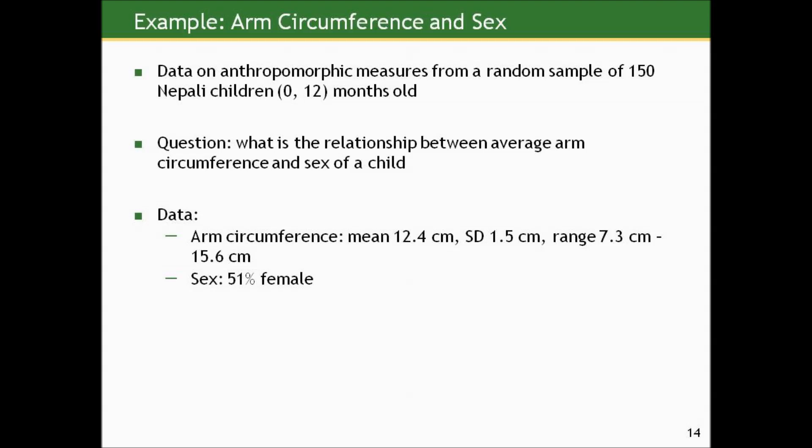Let's return to the arm circumference example. Even though we made a big deal about regression giving us the ability to incorporate continuous predictors when comparing means, we aren't restricted to continuous measures. We can do what a two-sample t-test does — comparing means — as a regression. We're allowed to have predictors that are binary. We were looking at anthropomorphic measures from a random sample of 150 Nepali children less than a year old, and the question is: what is the relationship between average arm circumference and sex of the child?